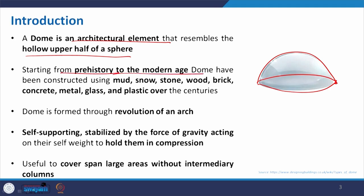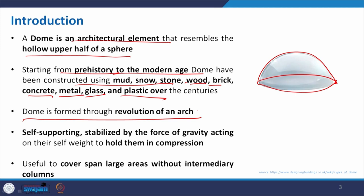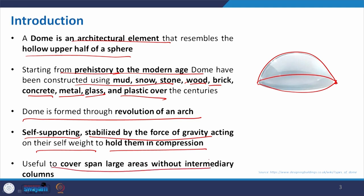Starting from prehistory to the modern age, domes have been constructed using mud — we cannot ignore the construction of the igloo, which is basically a dome structure — then wood, brick, concrete, metal, glass, and plastic. A dome is formed through revolution of an arch, self-supporting, stabilized by the force of gravity acting on the self-weight, holding it in compression. It is useful to cover large spans, helping us to have a column-less structure, like the dome in the Taj Mahal or the Pantheon in Rome.